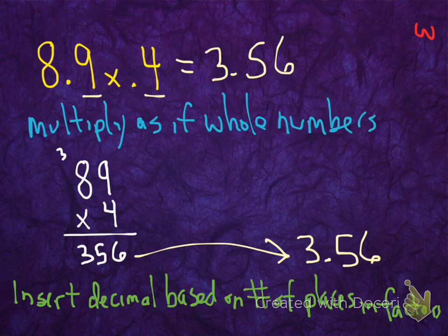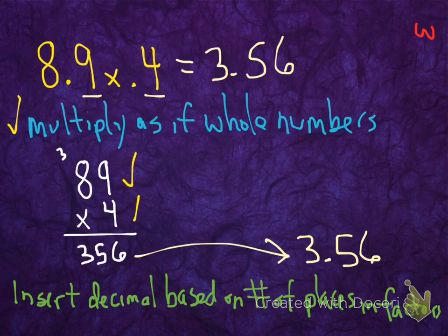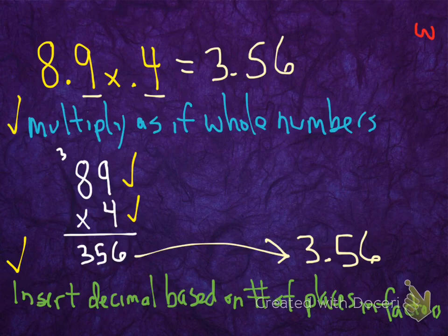Okay, one more example, and I think we're ready for independent work. 8.9 times 0.4. There's not much rounding we could do here. There's not much of our multiplication facts from 1 to 12 we could use. So I would just multiply these two numbers as if they're whole numbers. So 8.9, I'm just going to rewrite it as 89. And 0.4, I'll just write it as 4. And we just do our multiplication. 9 times 4 is 36. Bring down 6, carry the 3. 8 times 4 is 32. Add the 3 that we carried, 35. So it looks like 356. But we're going to keep this rule, it's going to follow us the rest of our life.